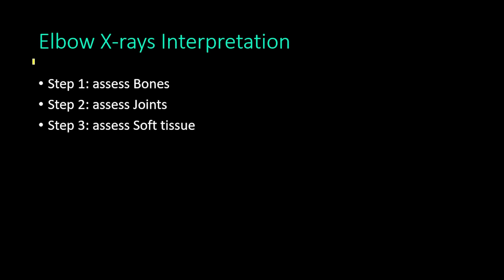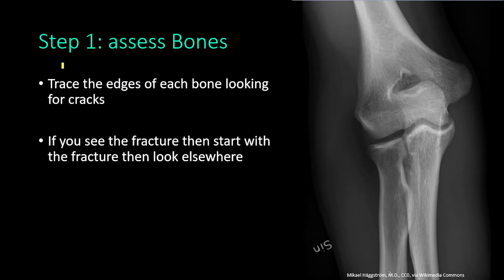In this video we will talk about elbow x-ray interpretation. In our approach to elbow x-rays we follow a three-step system: starting with assessment of the bones in step one, then in step two we assess the joints, and in step three we assess the soft tissues.